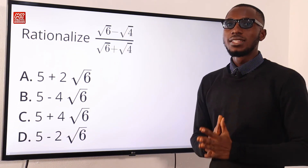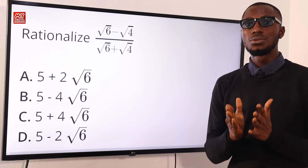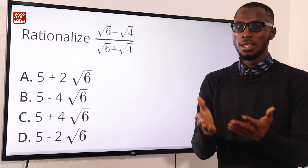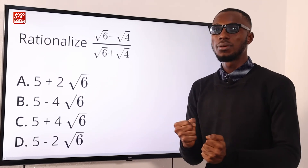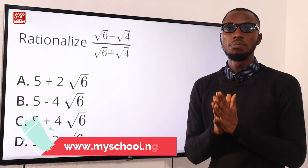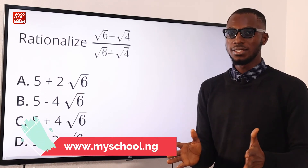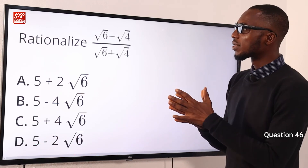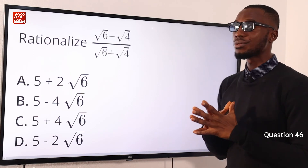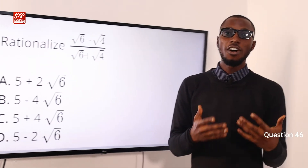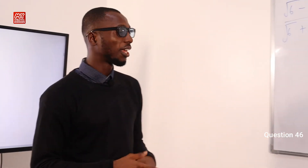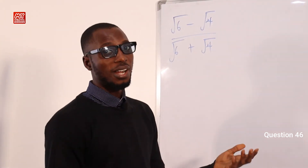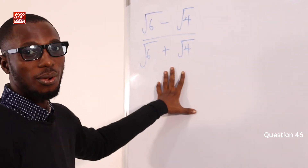Don't forget that we have several solution providers on the MySchool website. Click on the link in the description below to ask your questions and meet our solution providers. Now we are tackling question 46: rationalize (root 6 minus root 4) over (root 6 plus root 4). To rationalize, multiply numerator and denominator by the conjugate (root 6 minus root 4).